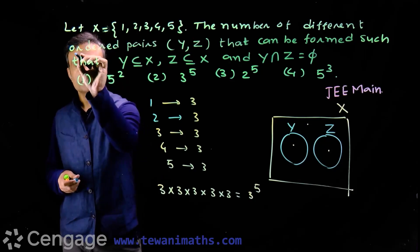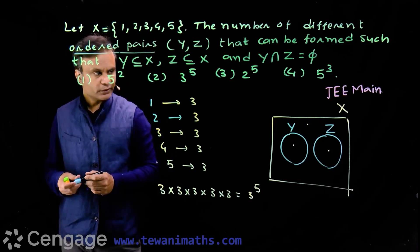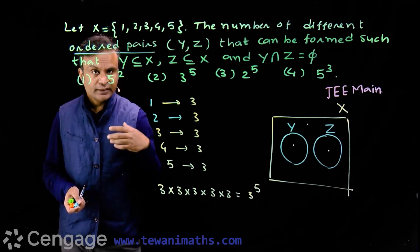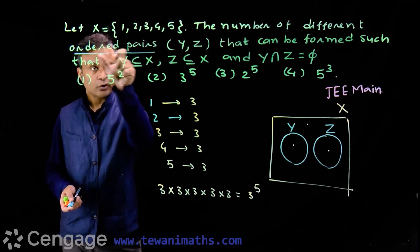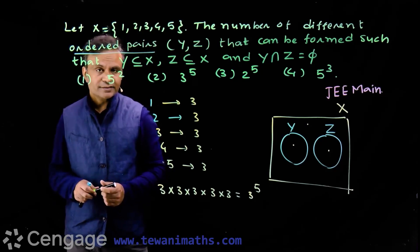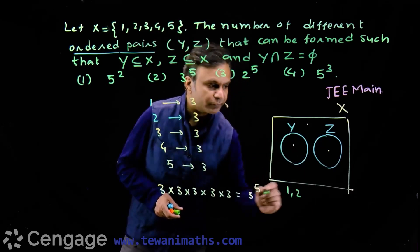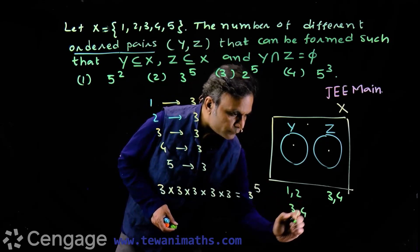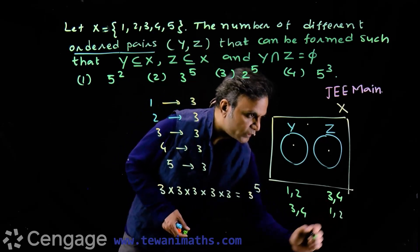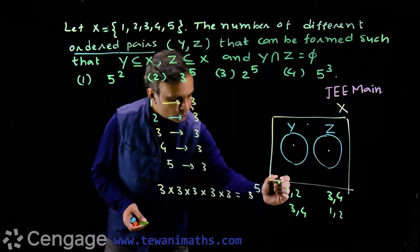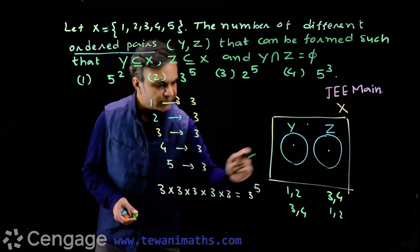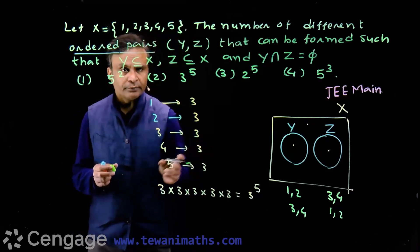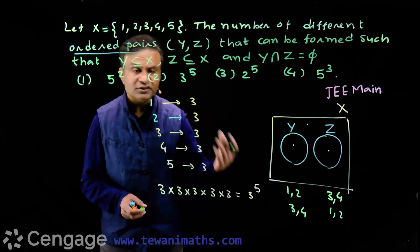Here, the word 'ordered pairs' is very important. Sometimes a question may ask for unordered pairs instead. But here we have ordered pairs. The logic is that in ordered pairs, it matters which set is getting which elements — which elements are in the first set and which elements are in the second set.